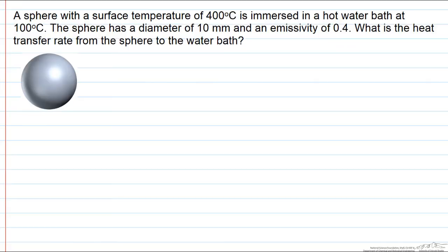The best way to show how to calculate film pool boiling is by using an example. Let's say we have a sphere with a surface temperature of 400 degrees C, and this sphere is immersed in a water bath that's 100 degrees C. We want to know what is the heat transfer rate from the sphere.